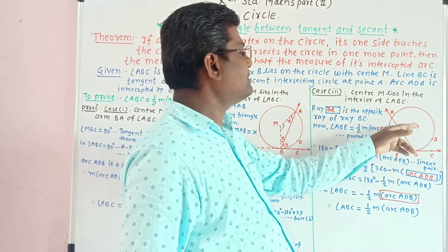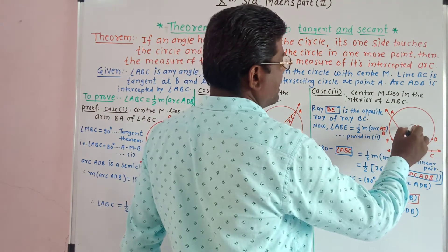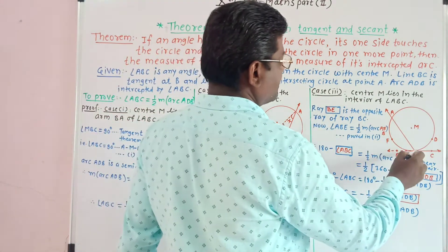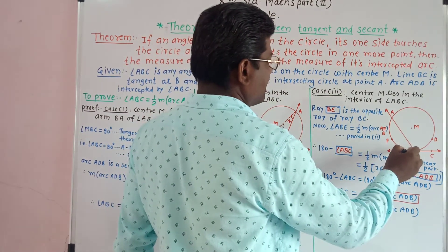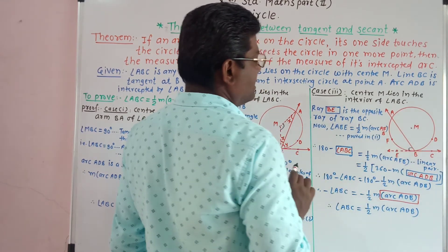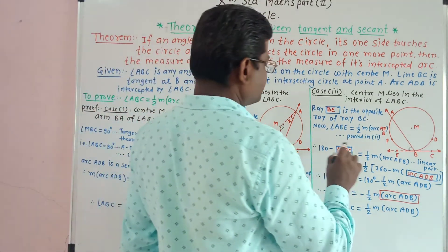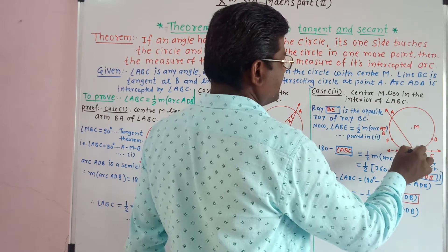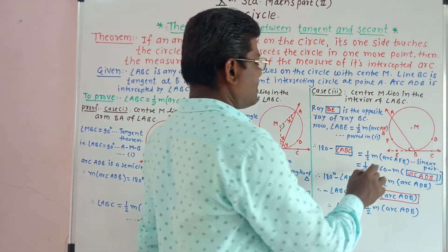Case 3: Center M lies in the interior of angle ABC. Draw ray BE as the opposite ray of BC. Angle ABE is half of major of arc AFB — this is proved in Case 2. Now angle ABE = 180° − angle ABC. So 180° − angle ABC = 1/2 × major of arc AFC.